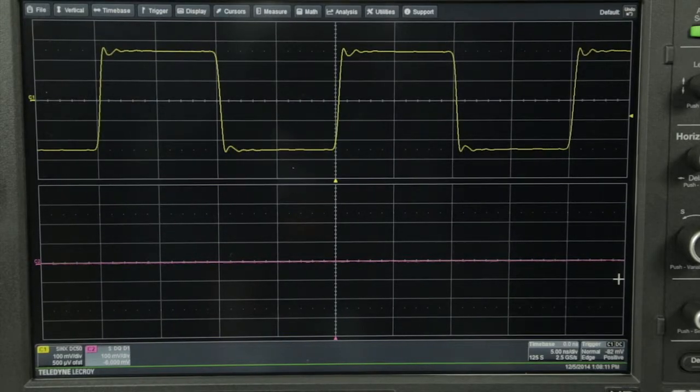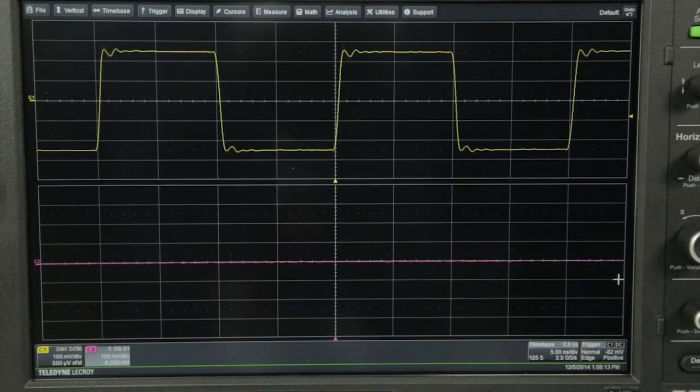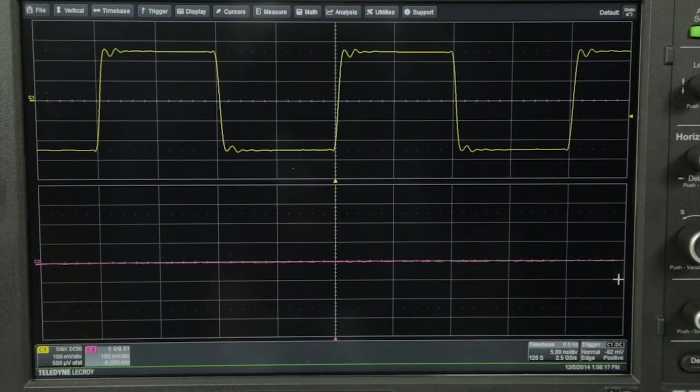There are three possibilities when a probe is connected to a circuit. The best case is the true size and shape of the signal gets to the oscilloscope. Another possibility is the probe alters the signal in some way. The worst case scenario is the operation of the device under test changes because of the attached probe.